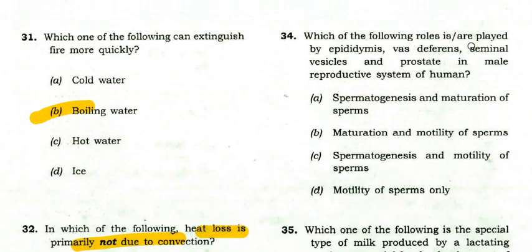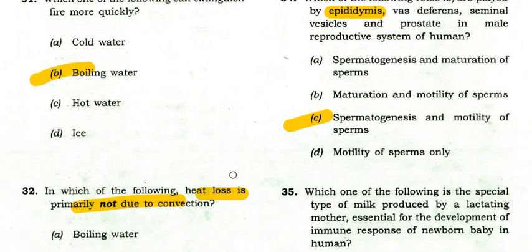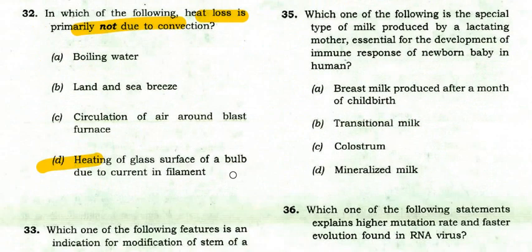Which roles are played by the epididymis, seminal vesicles, and prostate in the male reproductive system? The right option is C: spermatogenesis and motility of sperm.